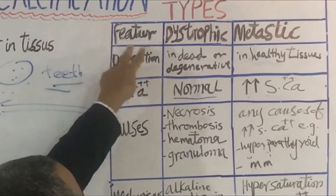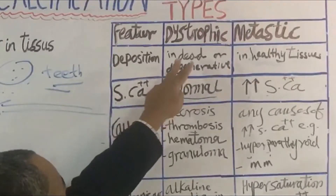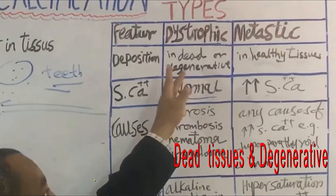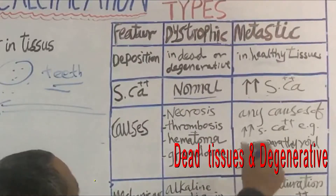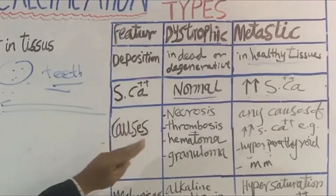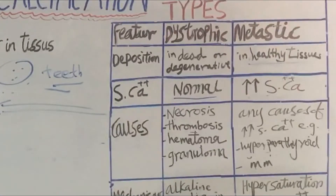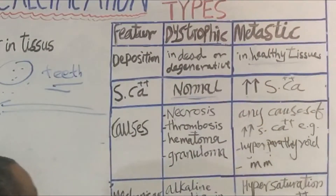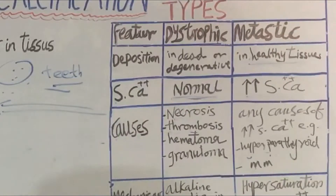Let us start with the features. The first feature is the site of deposition of calcium. In dystrophic calcification, this deposition takes place in dead and degenerative tissues only. While in metastatic calcification, it takes place in healthy tissue. The next differentiating point is serum calcium level. In dystrophic calcification, the serum calcium level is normal — there is no metabolic disorder. In metastatic calcification, the serum calcium level is increased, meaning there is some metabolic disorder or dysregulation of calcium.